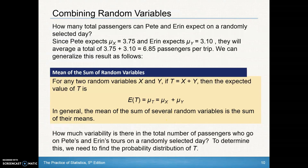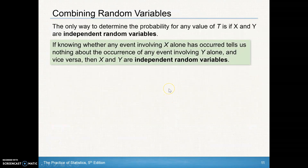How much variability is there in the total number of passengers on a randomly selected day? To determine this, we need to find the probability distribution of T. We cannot just add the two standard deviations — we cannot add standard deviations. The only way to determine the probability for the total is if both random variables X and Y are independent. If knowing whether any event involving X has occurred tells us nothing about the occurrence of any event involving Y, or vice versa, they are independent.